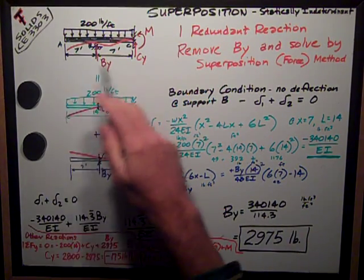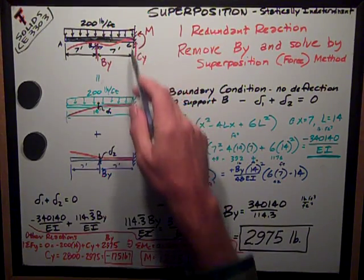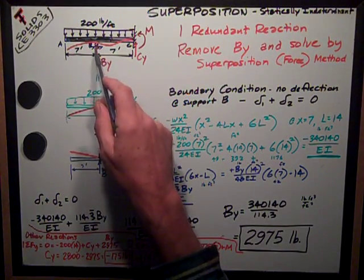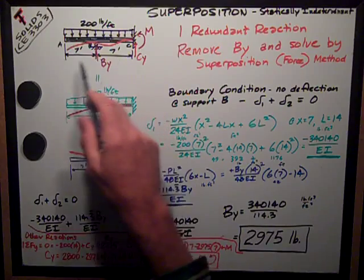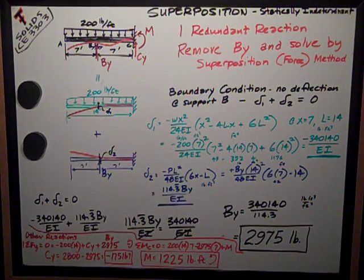The setup was something like this with a fixed support at this right end, cantilever, but it's propped up by a support here in the middle of the span. It's got a uniformly distributed load of 200 pounds per foot on it.